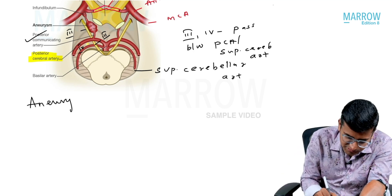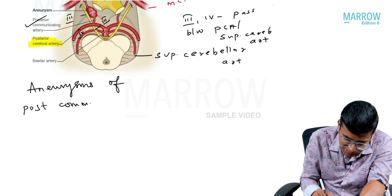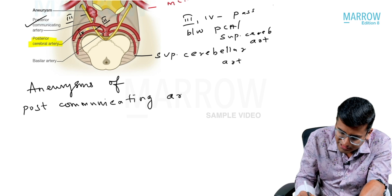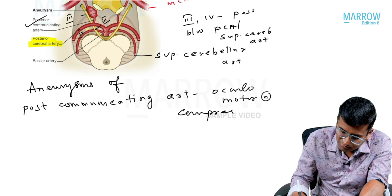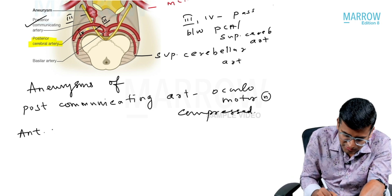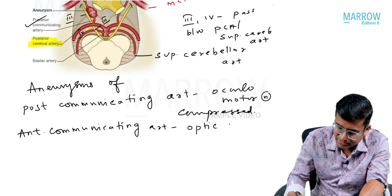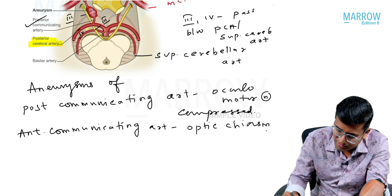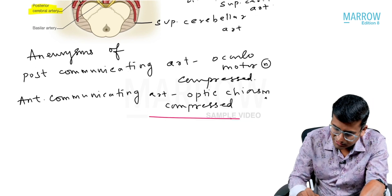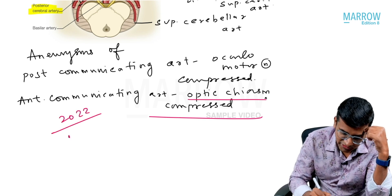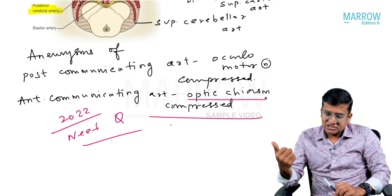Please note: in the case of aneurysm of the posterior communicating artery, the oculomotor nerve is compressed. In the case of aneurysm of the anterior communicating artery, the optic chiasma is compressed. These are very important — this question was asked in the 2022 NEET exam.